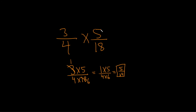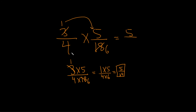Another way to do it — and this is probably how I would do it — is to cancel first. When you look here, you see the 3 and the 18, and you notice that 3 goes into 3 one time and into 18 six times, and then you just multiply. 1 times 5 gives us 5, and 4 times 6 gives us 24. I like doing it that way better.